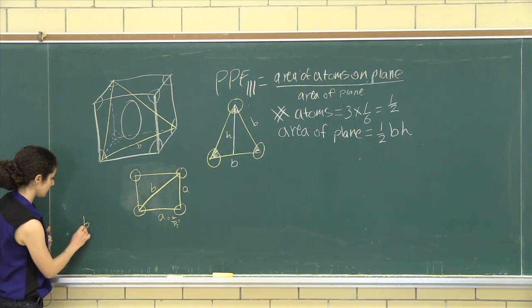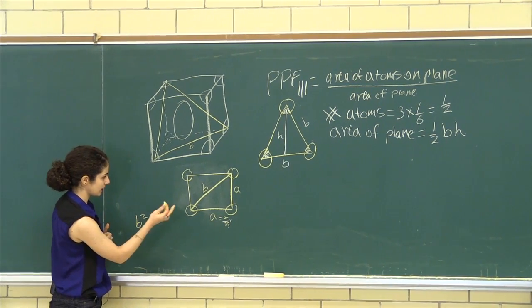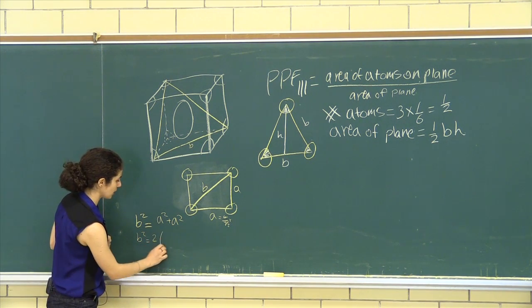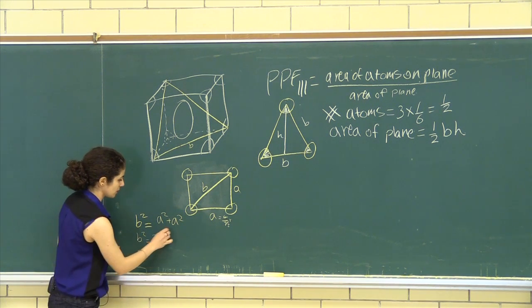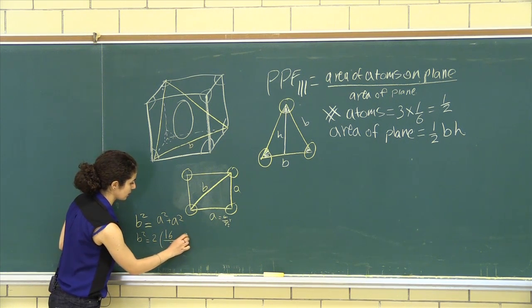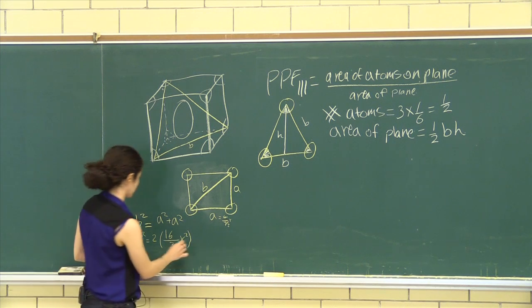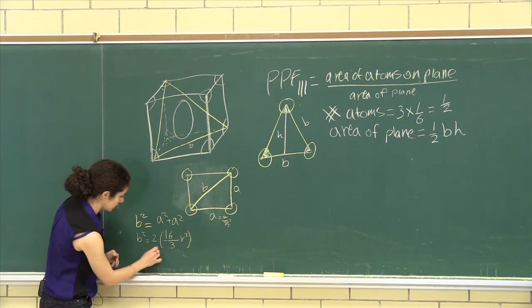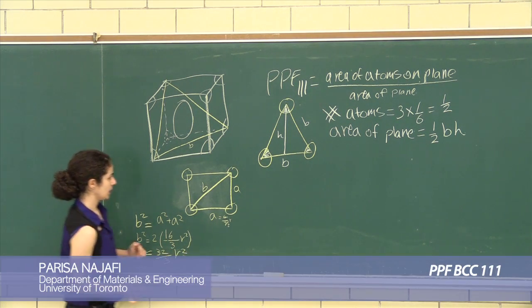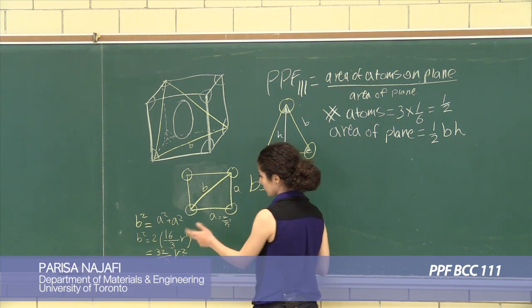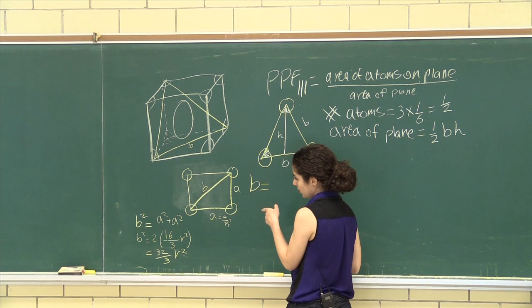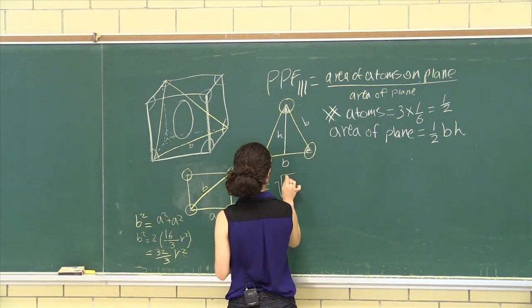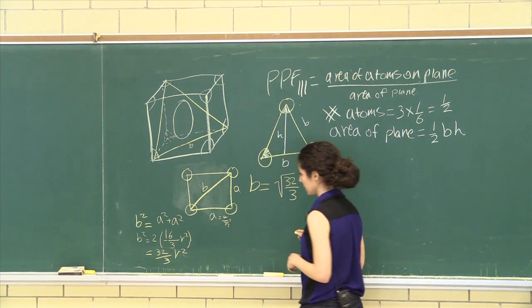So let's calculate B, which is B squared is equal to A squared plus A squared. So B squared is equal to 2 times 4 over root 3, R squared. That would mean 16 over 3, R squared. We get 32 over 3, R squared. B is equal to root 32 over 3 with an R at the side. So that's our B.